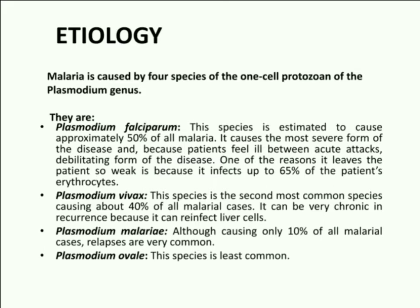First is Plasmodium falciparum. According to a few studies, this species is estimated to cause approximately 50% of all malaria. It causes the most severe form of the disease, and because patients feel ill between acute attacks, it is the most debilitating form of the disease. It leaves the patient very weak because it causes severe infections and infects up to 65% of the patient's erythrocytes.